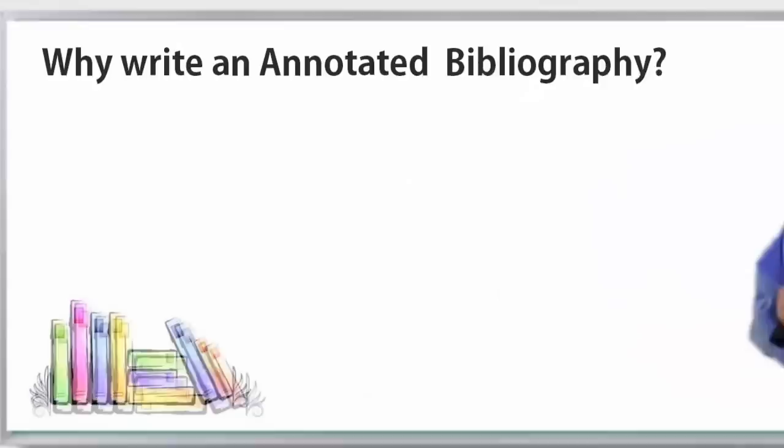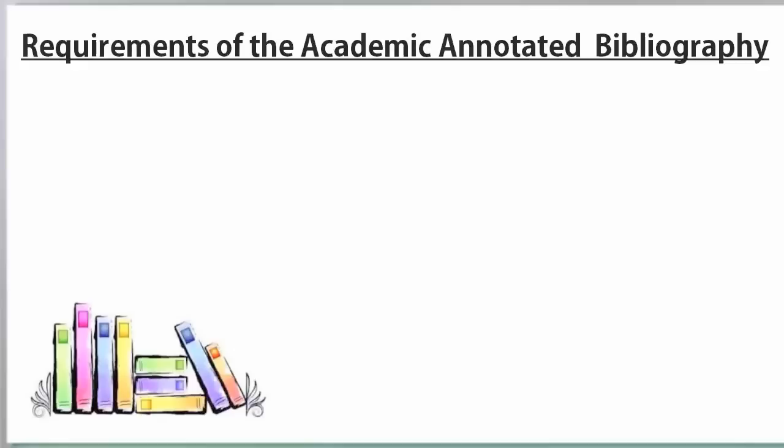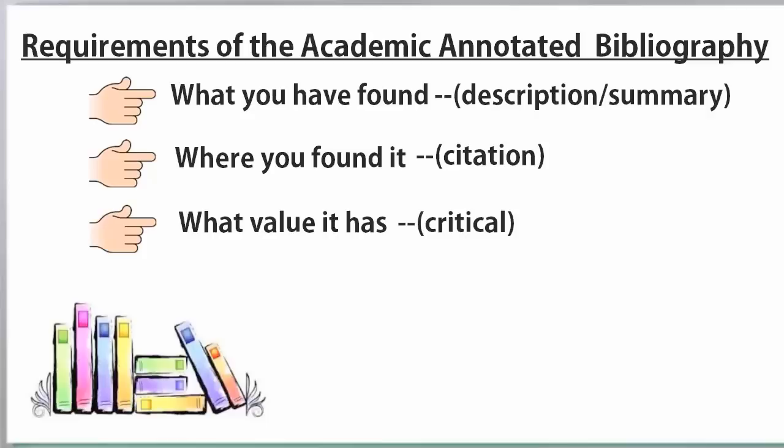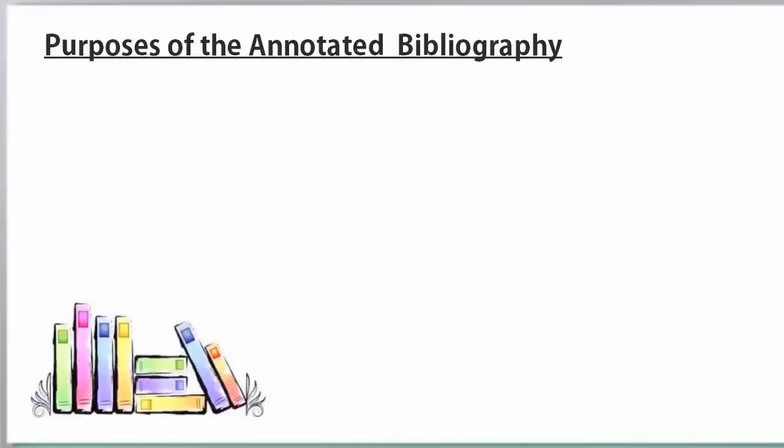Let's take a look at some of the things that you must keep track of on this new level. First, you have to keep track of what you found. This is descriptive information. You have to keep track of where you found it. That is, citation information. And you have to keep track of what value it has for you. And that's critical information. These are the same goals as select quote, but you're doing them more formally.